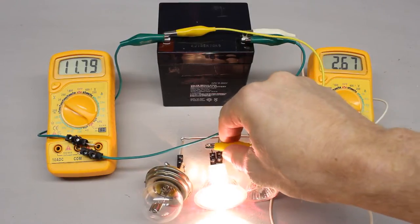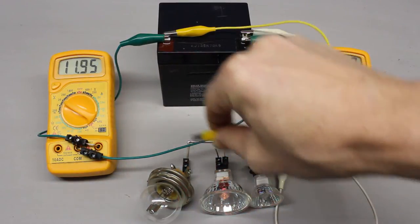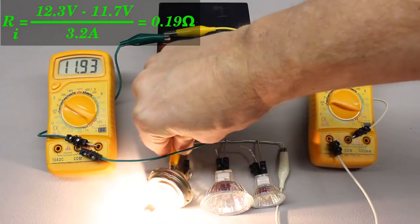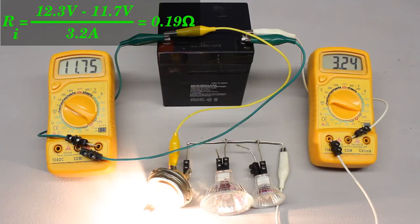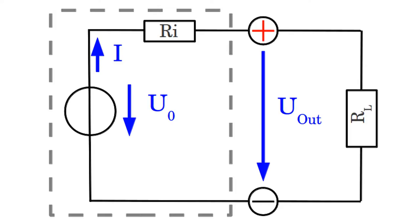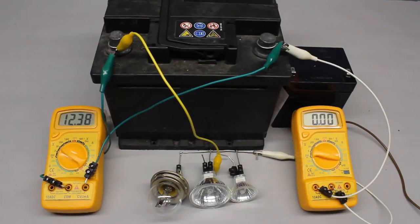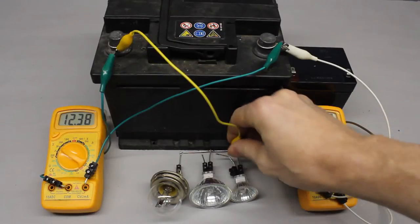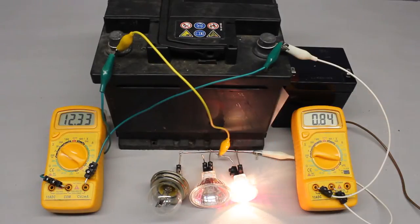The battery acts like an ideal voltage source with a resistor connected in series to one of its terminals. The resistance of those hypothetical devices inside of the galvanic cells is called the inner resistance of the battery. This inner resistance is not a constant value — besides the current drawn, the charge condition and the environmental temperature also affect the value.